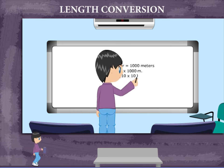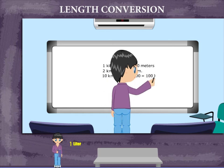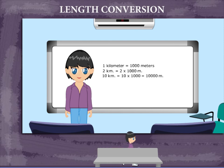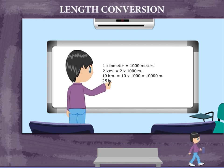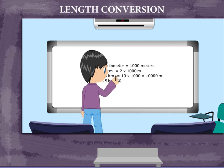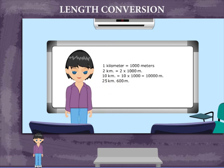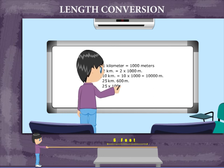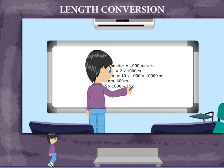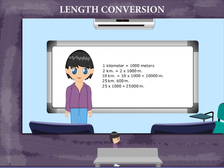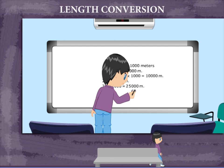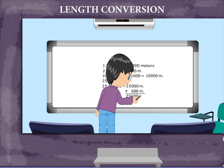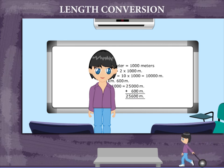He puts the question on the board: 25 kilometers 600 meters, and converts this into meters. 25 × 1000 = 25,000 meters. Add 600 meters, you get 25,600 meters. Well done, Jimmy!